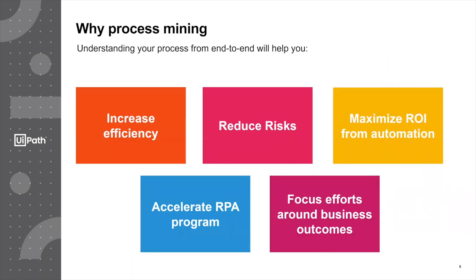So why do people really start using process mining? One of the reasons is to increase efficiency. By making changes to the real process, you will have a better use case of improving that efficiency than when you're acting on a presumed process. Then the next step is to reduce risks. By visualizing and getting a grip on your real process, you are reducing the risks in your end-to-end business process. The next thing is to maximize ROI for automation, which is also loosely coupled to the acceleration of the RPA program. By using process mining, you can identify the real bottlenecks in your system or process, and by employing automation or RPA to the bottleneck, you will have a bigger impact on the improvement you're getting for your process.